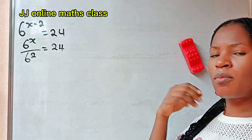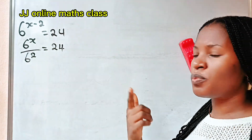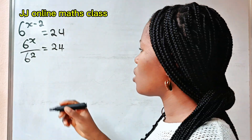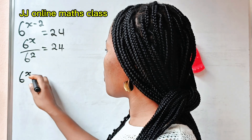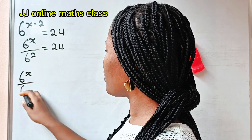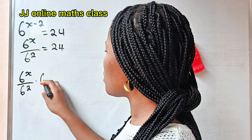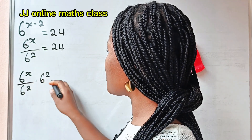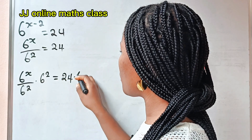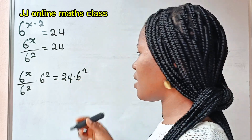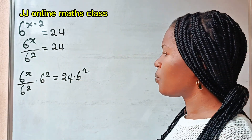Now, let's multiply both sides of this equation by 6 to the power of 2. If we do that, we have 6 to the power of x divided by 6 to the power of 2, multiplied by 6 to the power of 2, is equal to 24 multiplied by 6 to the power of 2.